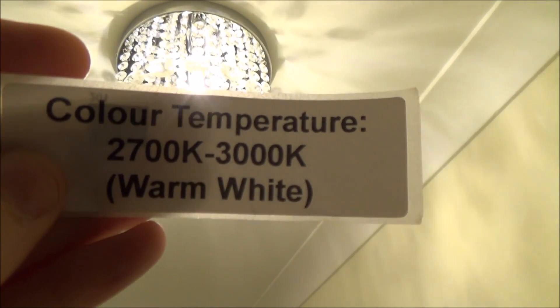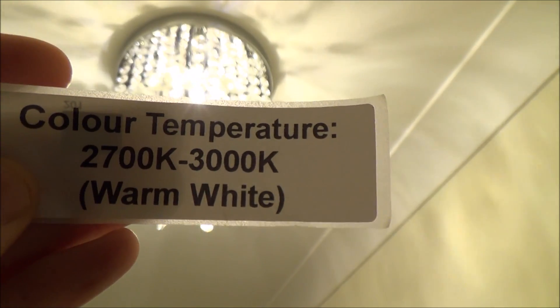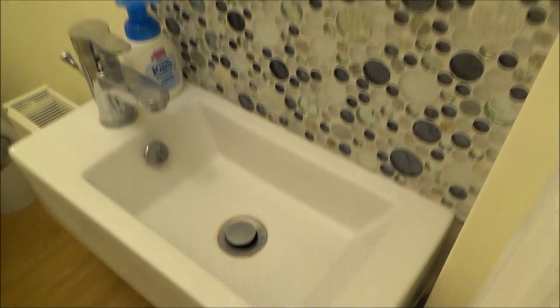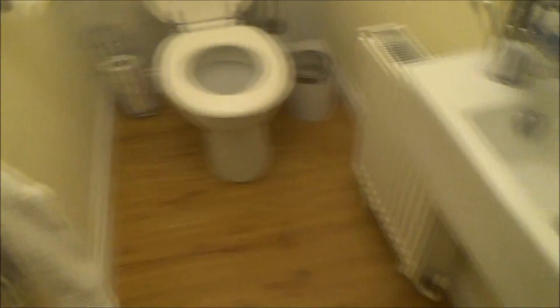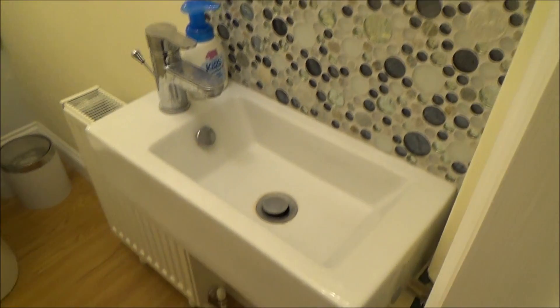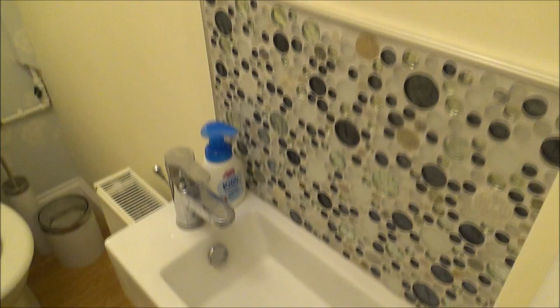Okay so now you can see these are the 2700K to 3000K, the warm white, and you can see the room is much more yellower. So when you look at the sink and the toilet, everything just looks more yellow. So it really can affect the room. You know, the colors you choose on the walls and everything, they will all look different depending on the lights that you put in.